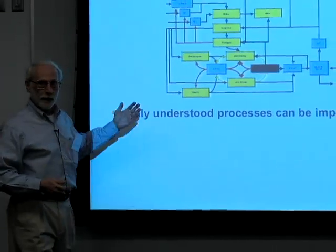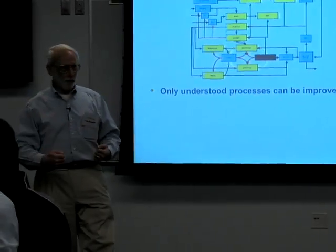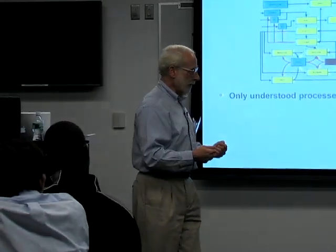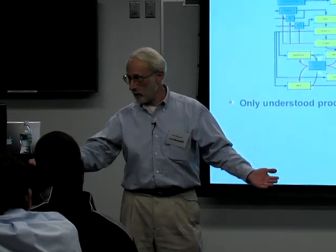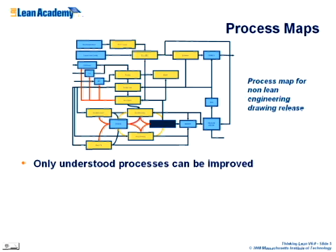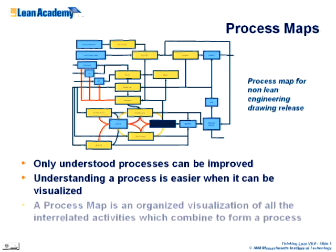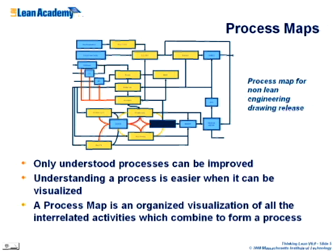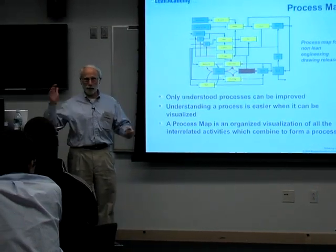The only way you can improve a process is to understand it. One of the things about lean thinking is we start with the current state and try to improve it — we don't throw it out and reinvent the wheel. We, the people doing it, the frontline workers, try to improve it again and again. A process map is an organized visualization of all the interrelated activities which, when combined, change an input to an output.